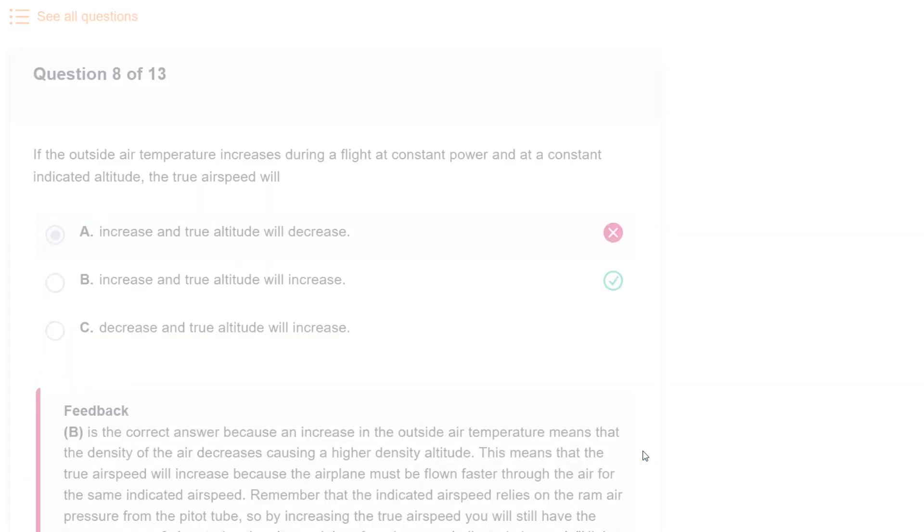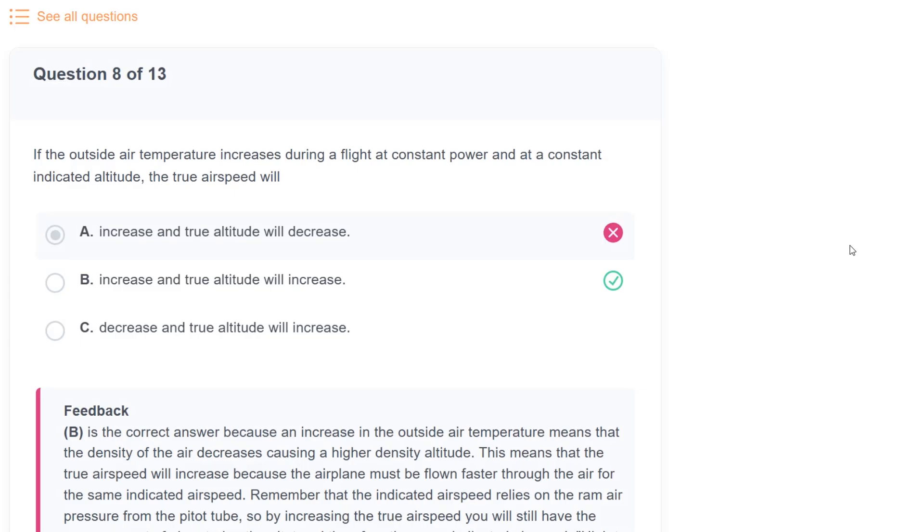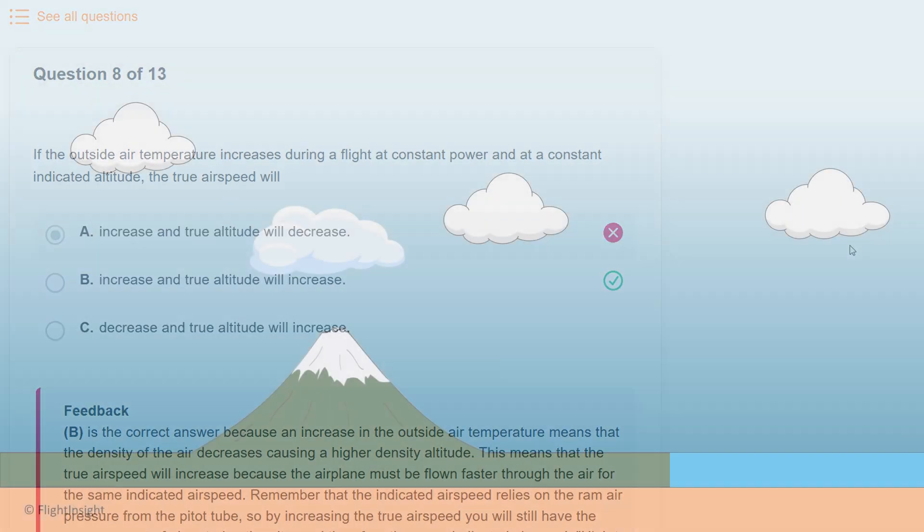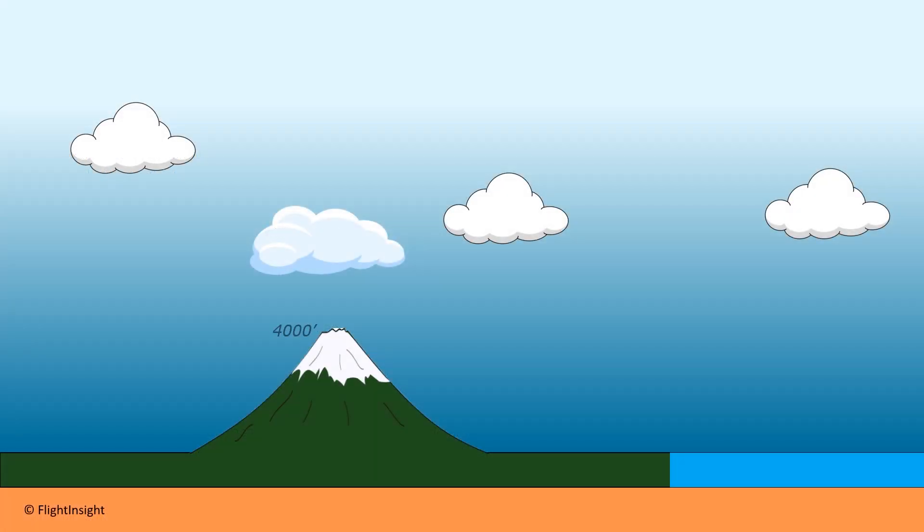This turns out to be wrong, but why? The reason will clue us into how altimeters really work. Let's reference a mountaintop that's at 4,000 feet above sea level.